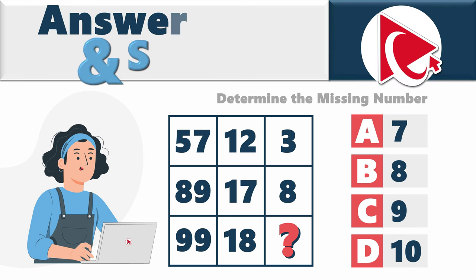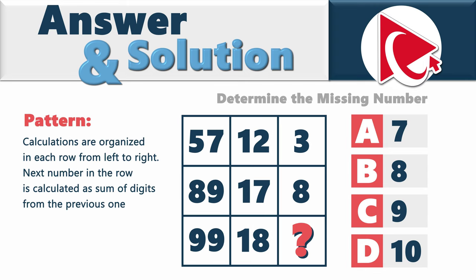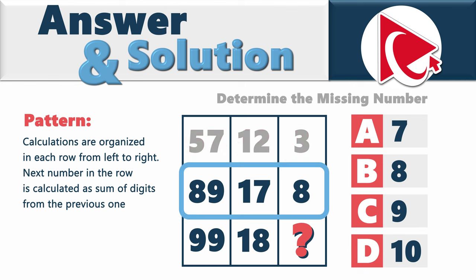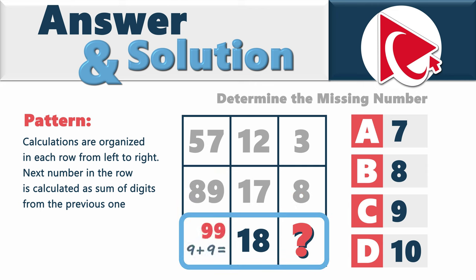If you look closely, you can easily recognize the pattern. The calculations are organized in each row from left to right — the next number is the sum of digits from the previous one. For example: 57 → 5+7=12, and 1+2=3. Row two: 89 → 8+9=17, and 1+7=8. Row three: 99 → 9+9=18, so 1+8=9. The correct answer is Choice C, 9.